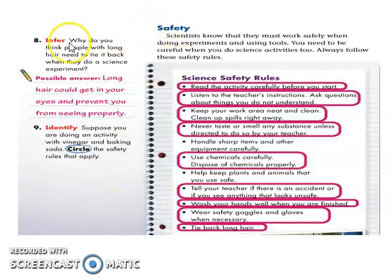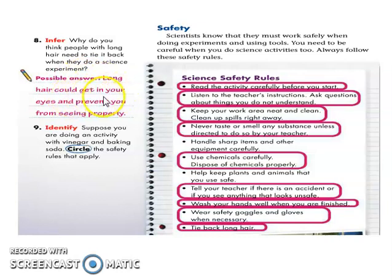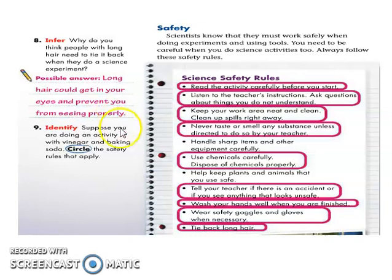Here in number eight: why do you think people with long hair need to tie it back when they do a science experiment? A possible answer: long hair could get in your eyes and prevent you from seeing properly, or it could burn when you're doing an experiment using a burner. That's why it's important to tie back your hair.